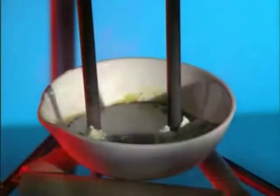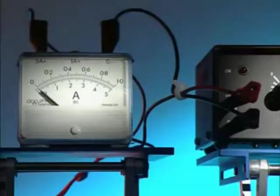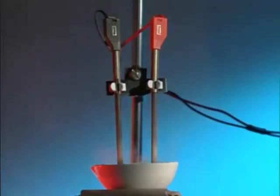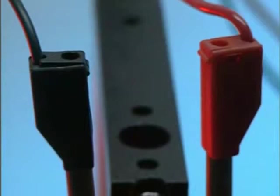Lead bromide melts at 370 degrees Celsius. Switch on now and the current flows. In this circuit, the electrode on the right is positive. The one on the left is negative. As electricity passes through the molten lead bromide, chemical reactions start.